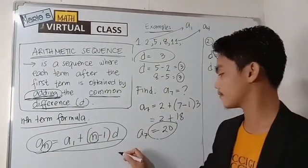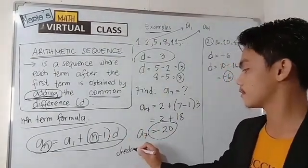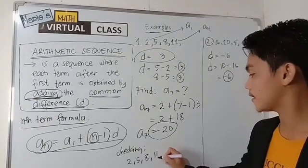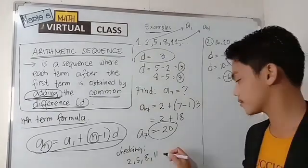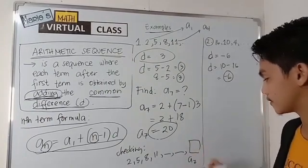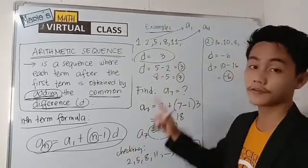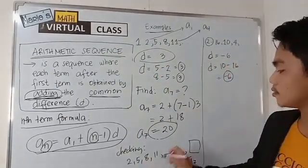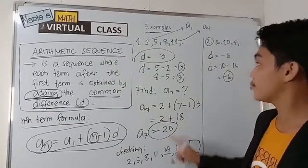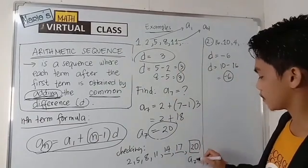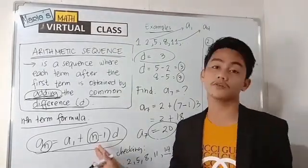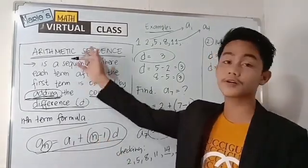So, by checking, let us have this sequence. If we are going to check if our answer is correct, 2, 5, 8, 11. And we have here first, second, third, fourth term. We have the fifth, the sixth, and the seventh term. This is our answer. The seventh term. Let's check. Let's add the common difference. 11 plus 3 would be 14. 14 plus 3 would be 17. 17 plus 3 would be 20. Therefore, the seventh term is really 20. And our answer is correct. So, students, that is how you're going to apply the nth term formula of our arithmetic sequence.